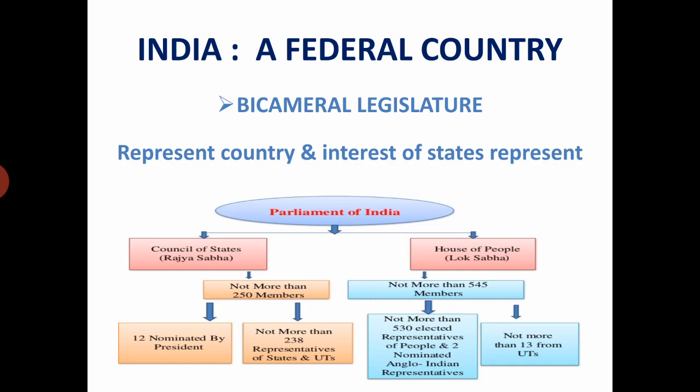The highest lawmaking body in India is the parliament, which is bicameral, i.e. it comprises of two houses — Lok Sabha and Rajya Sabha. Members of Rajya Sabha are indirectly elected by state legislative assemblies, and for this reason the Rajya Sabha has powers to protect the interests of states against the union government.